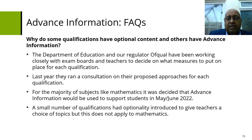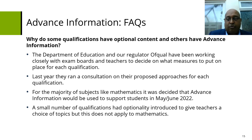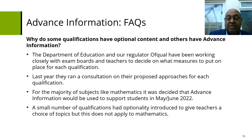Why do some qualifications have optional content while others have advanced information? In maths, optionality doesn't work. Unlike some other subjects where you can simply leave out certain topics for assessment, in mathematics everything is linked. As I explained with synoptic assessments, it really doesn't work in maths to exclude a particular topic - number work permeates everything you do. Similarly, other topics could be used in some shape or form, so optionality doesn't work for maths.